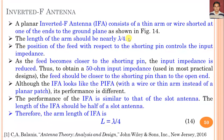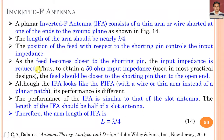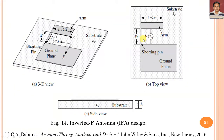The length of the arm should be nearly equal to lambda by 4. The position of the feed with respect to the shorting pin controls the input impedance. As you can see, the shorting pin and the position of the feed element are key: input impedance matching can be obtained by properly choosing the gap between the shorting pin and the feed element. As the feed becomes closer to the shorting pin, the input impedance is reduced. Thus, to obtain 50 ohm impedance used in most practical designs, the feed should be closer to the shorting pin than to the open end.